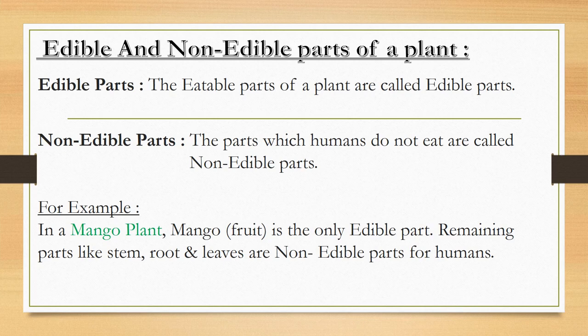Some of you may wonder, do all plants have just one edible part? Obviously no. Some plants have more than one edible part which can be eaten as food. Like in a mustard plant, the edible parts are its leaves and seeds, which are used to extract oil that is used in cooking.